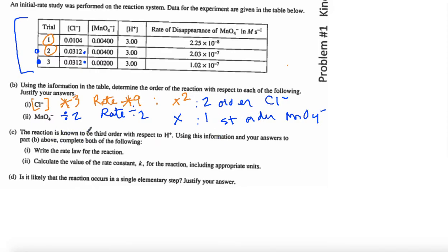The reaction is known to be third order with respect to H+. So, H+, third order. Write the rate law for the reaction. Rate is equal to K times the first reactant, Cl-, and that's to the second power. And then the second reactant, MnO4-, and that's to the first power. I'll put it in there. And then finally, H+ was given to us to the third power. That's (i).